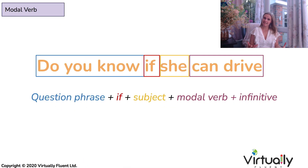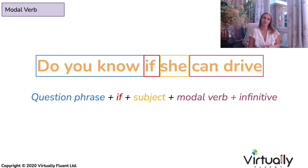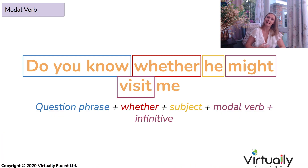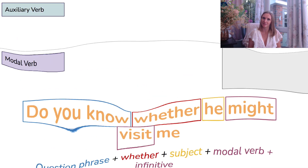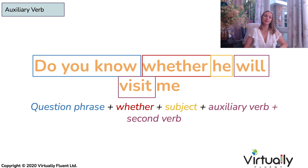When it comes to modal verbs, it's exactly the same — put modal verb plus infinitive at the end after our subject, as if it's a normal affirmative sentence. For example, 'Do you know if she can drive?' And we can replace the word 'if' with 'whether' as well — 'Do you know whether he might visit me?' When it comes to auxiliary verbs, it's exactly the same. Replace that modal for the auxiliary. We can use this in any tense that we want.